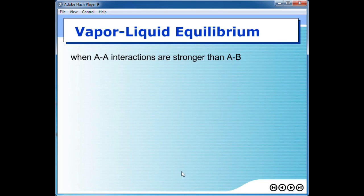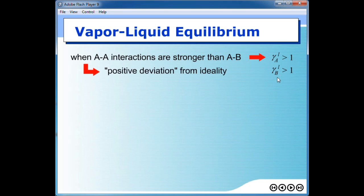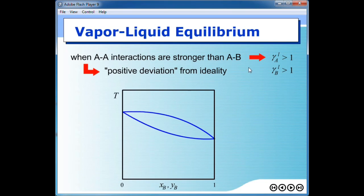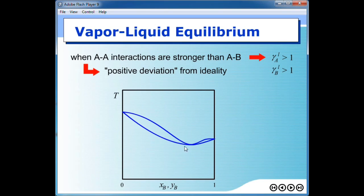Now, if we consider the interaction between two molecules of A: if the interaction between A and A is stronger than the interaction between molecules of A and B, then the activity coefficient of A and B in liquid phase would be greater than 1. The deviation from ideality becomes a positive deviation, and the pressure-composition diagram is shifted accordingly. Both the bubble line and dew line meet at one single point, called the minimum boiling azeotrope. At this point, the mole fraction in liquid phase and vapor phase are the same, which causes a big problem for distillation.